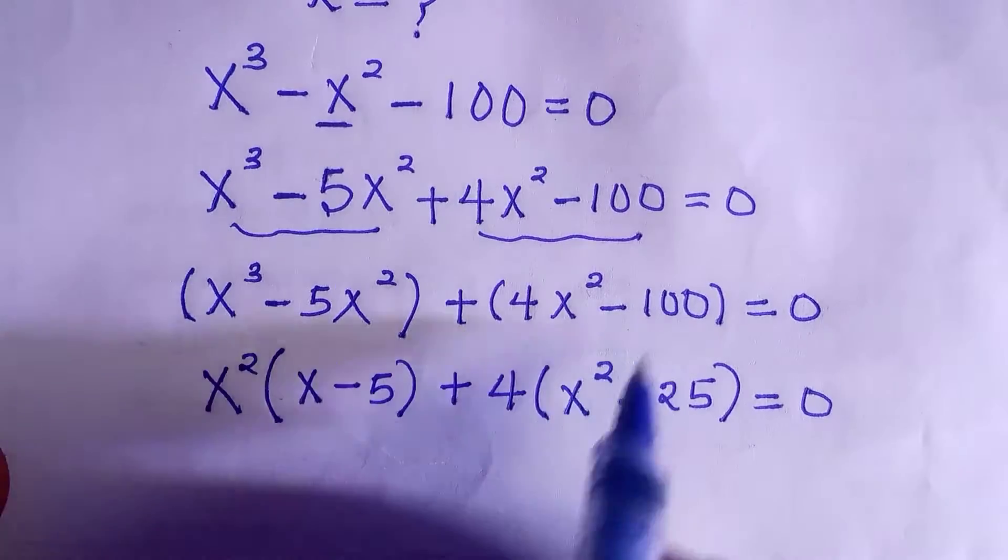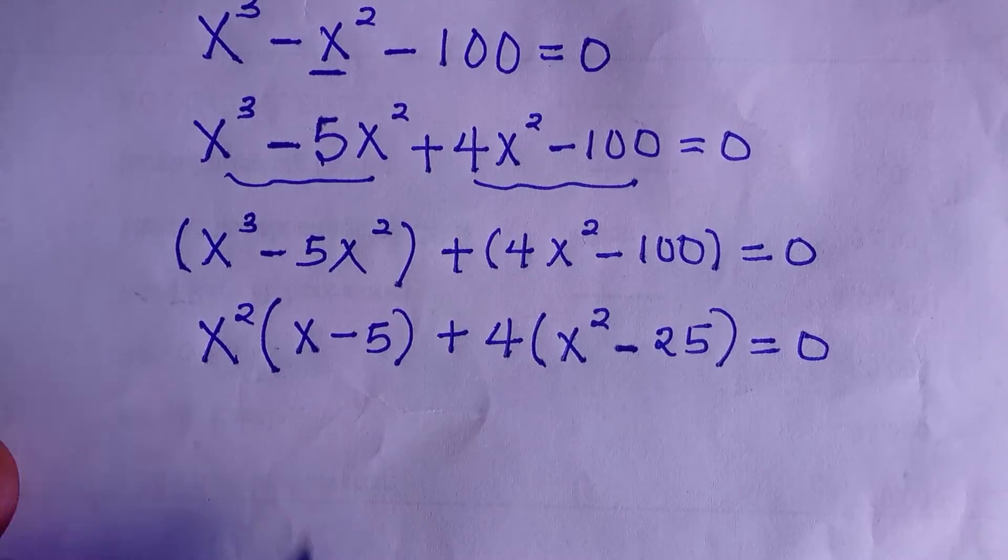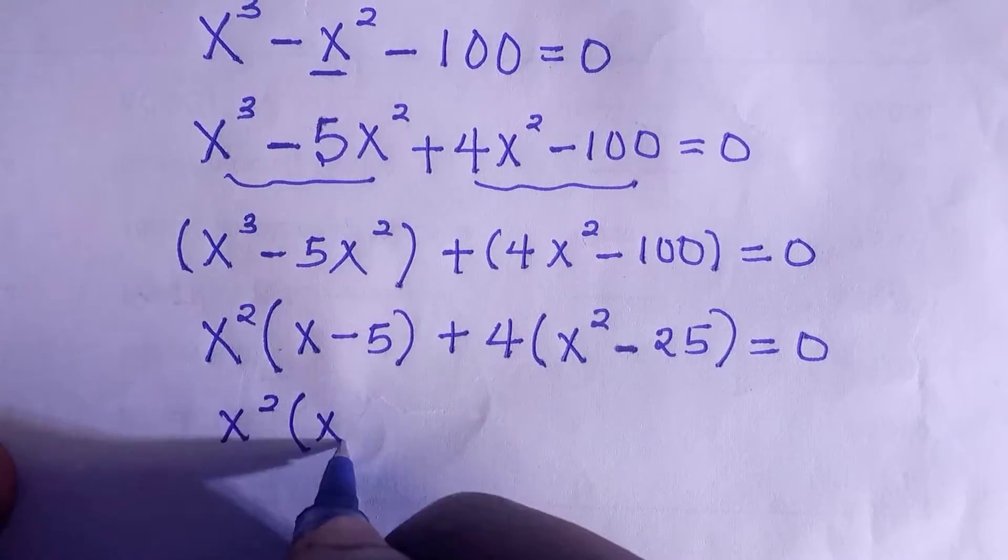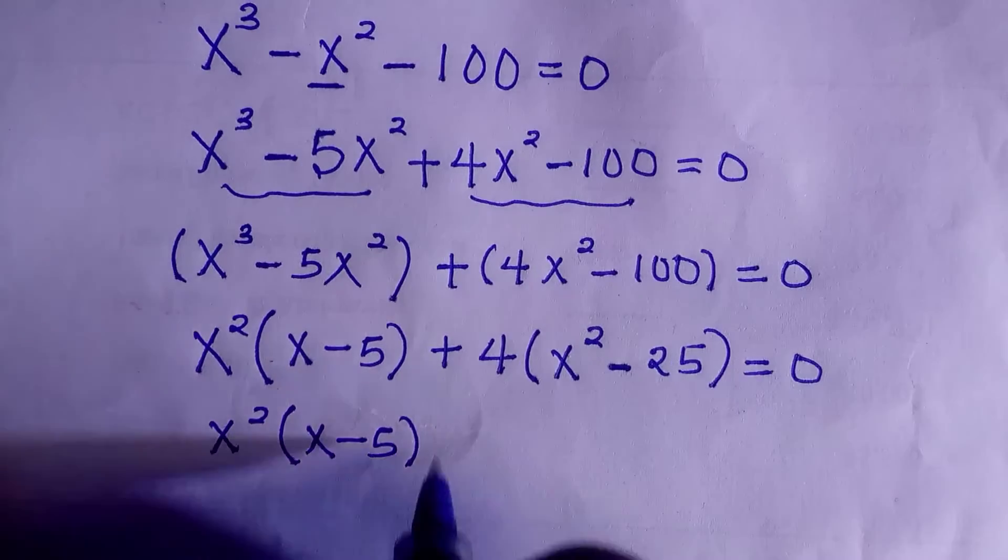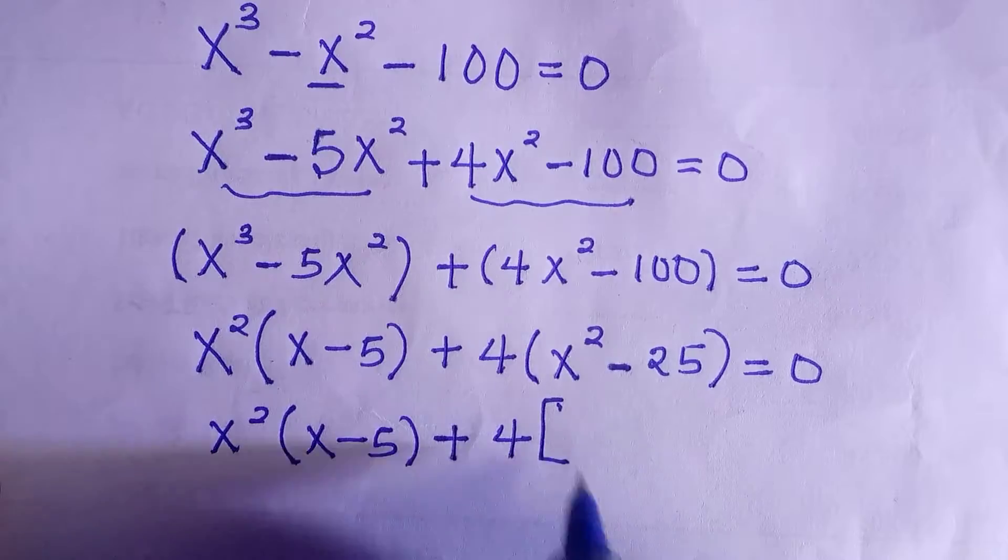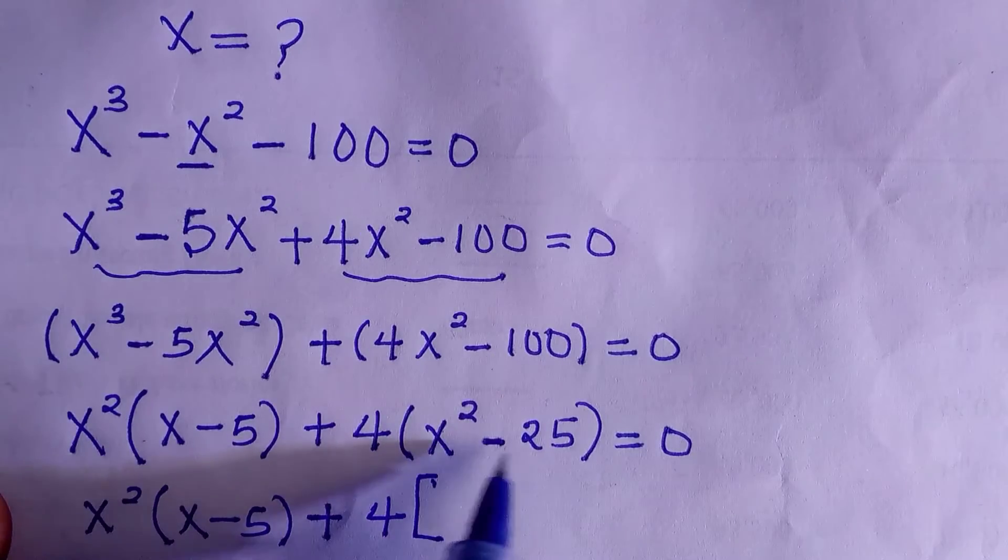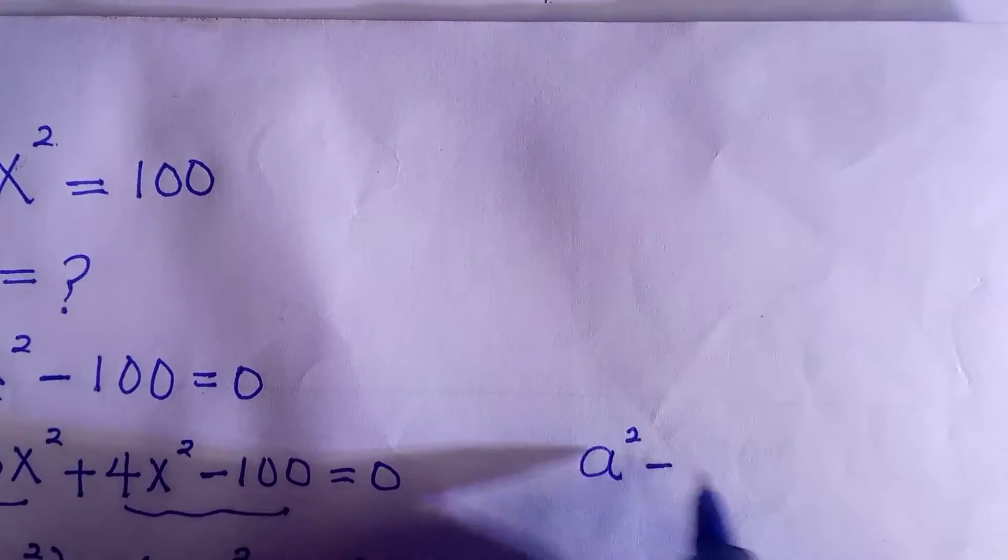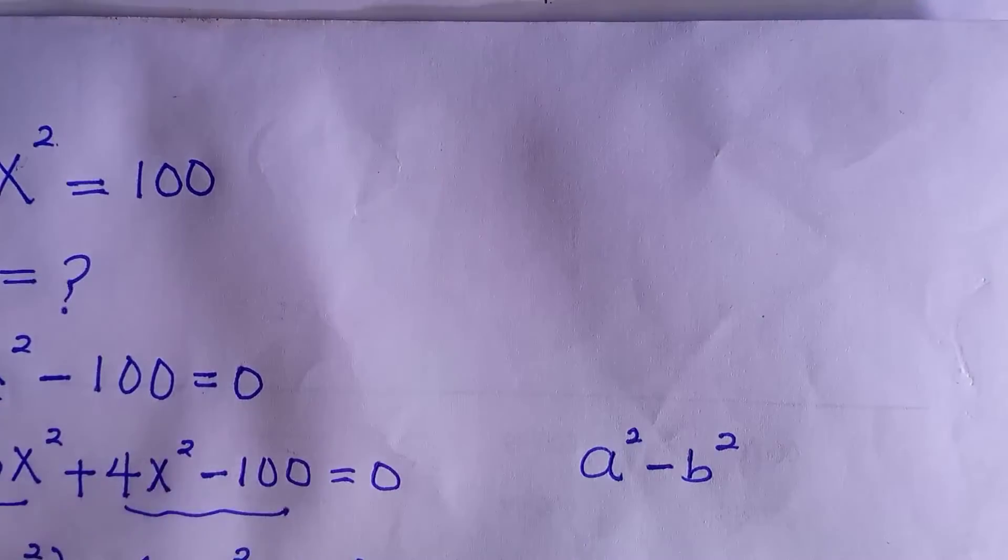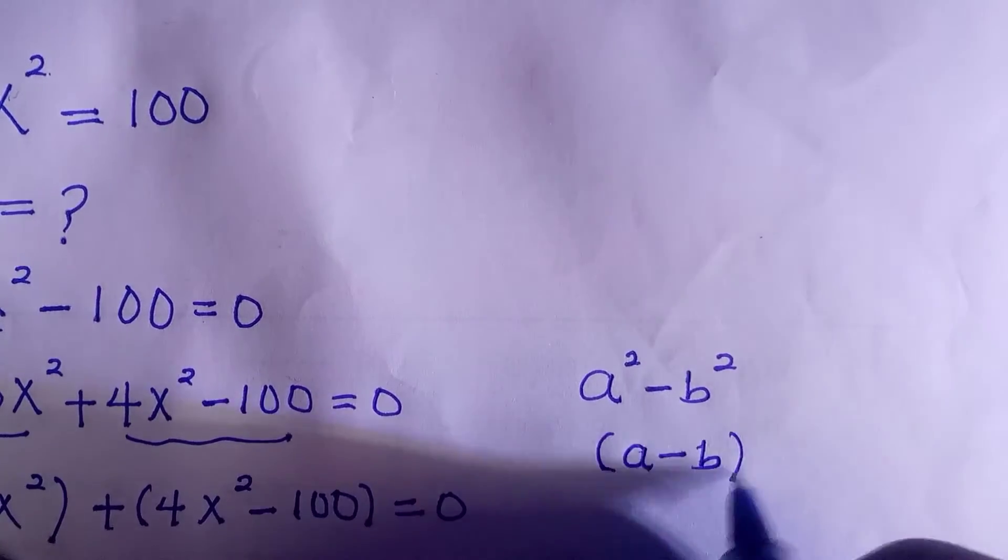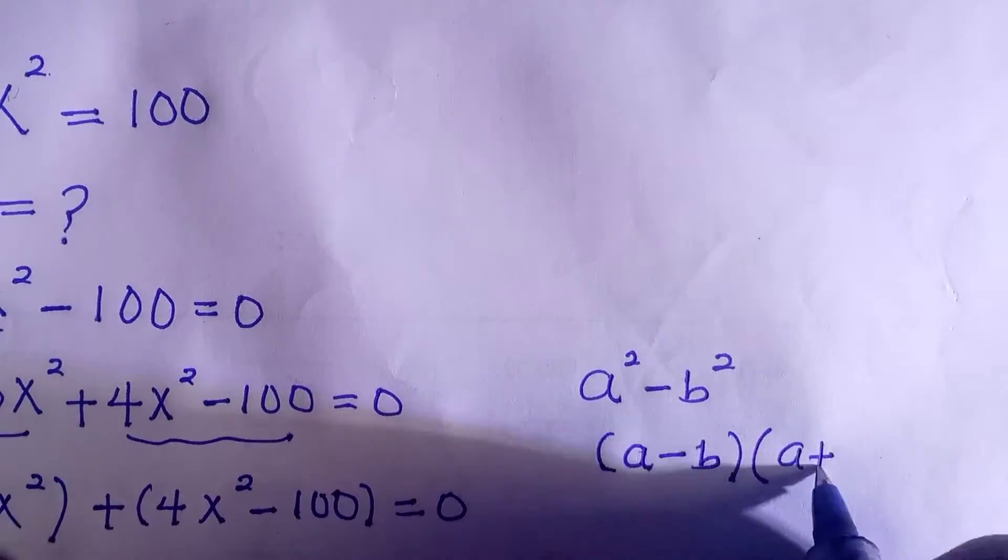Then we have x raised to power 2 bracket x minus 5 plus 4 in a larger bracket. I want to factorize x raised to the power 2 minus 25, and I'm going to apply the knowledge of difference of 2 squares. We have a raised to the power 2 minus b raised to the power 2. That is difference of 2 squares. It is turned into a minus b and a plus b.